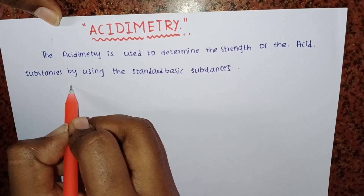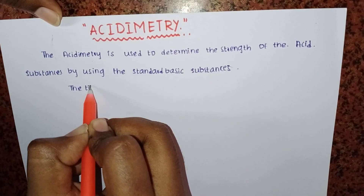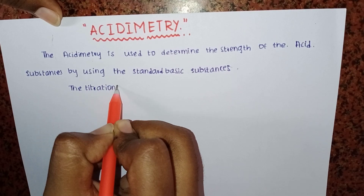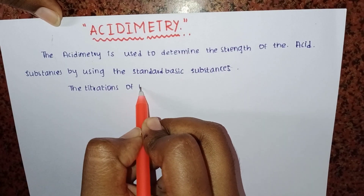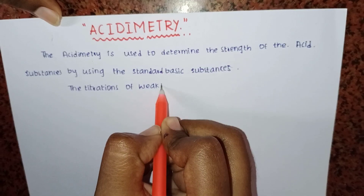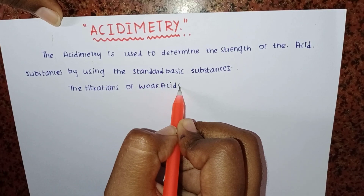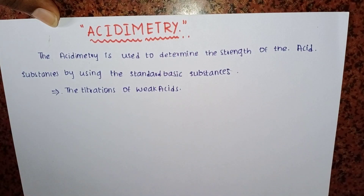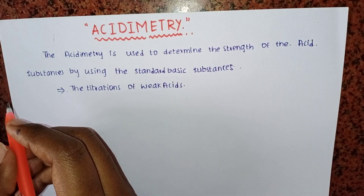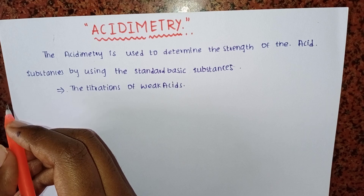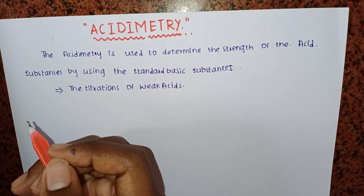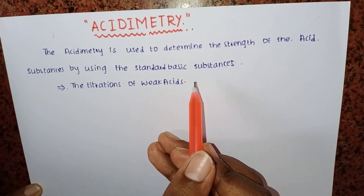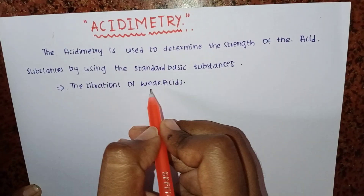In acidimetry, this is the titration of weak acids. So what are the chemicals which come under estimatory? First, the main topic is the titration of weak acids.